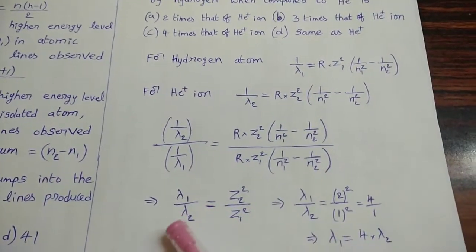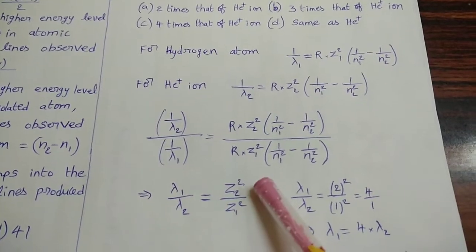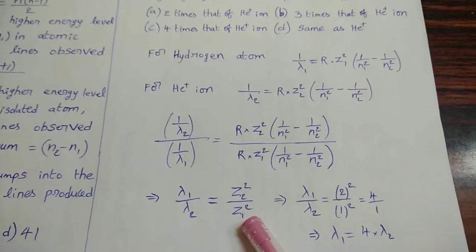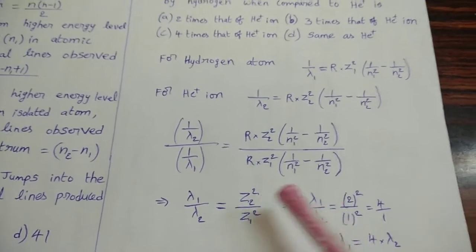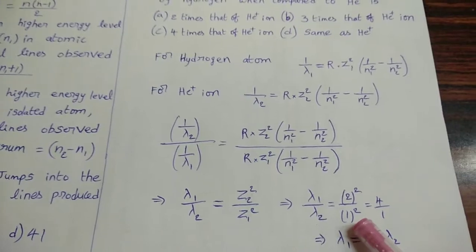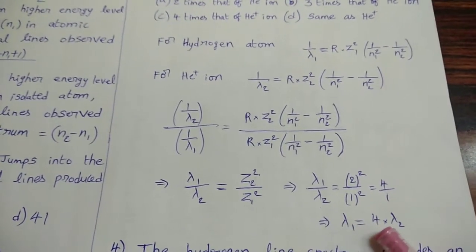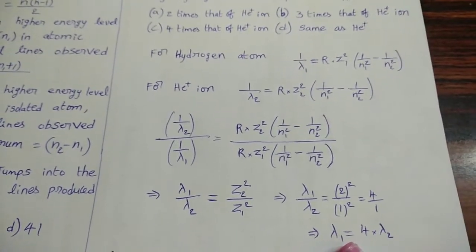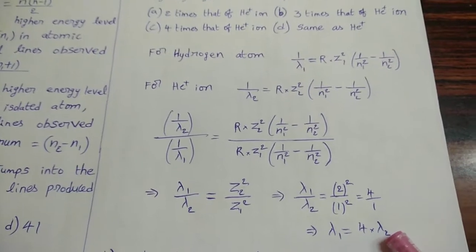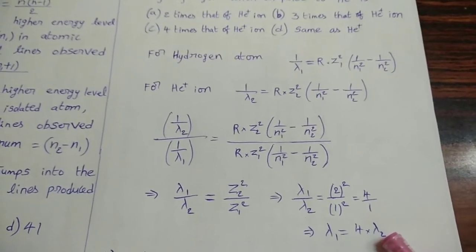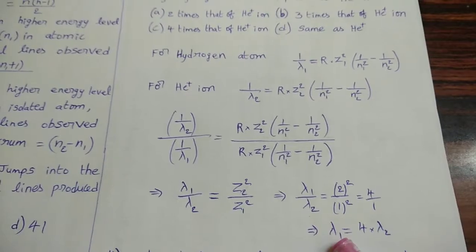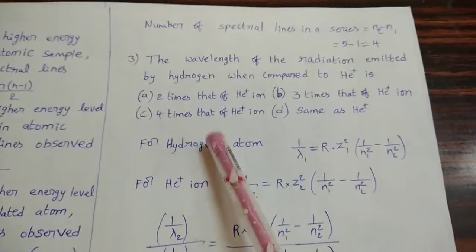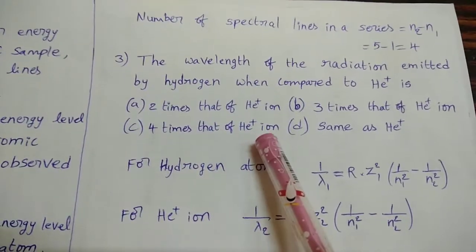Remaining is λ₁/λ₂ = Z₂²/Z₁². Here Z₁ is the atomic number of hydrogen, Z₂ is the atomic number of He+ ion. So Z₂ = 2, giving 2²/1² = 4, so λ₁ = 4λ₂. Lambda 1 is the wavelength emitted from hydrogen, lambda 2 is the wavelength for He+ ion. This wavelength is 4 times that wavelength. Option C is the answer: four times that of He+ ion.